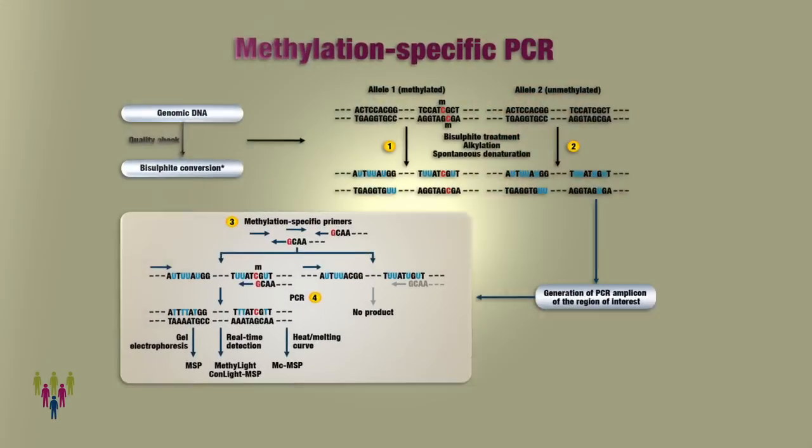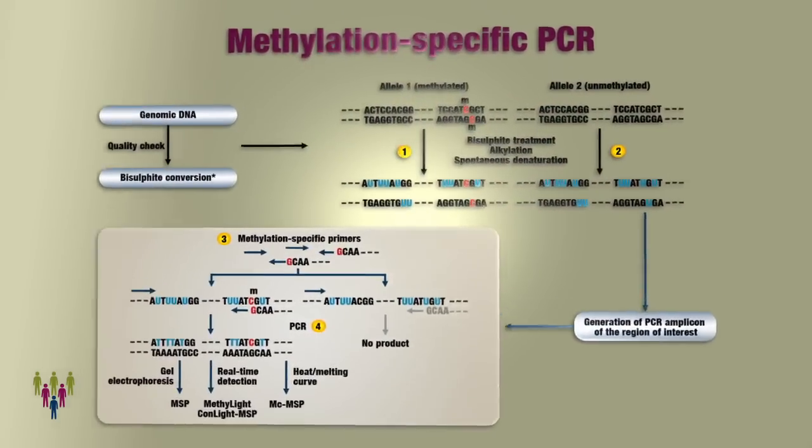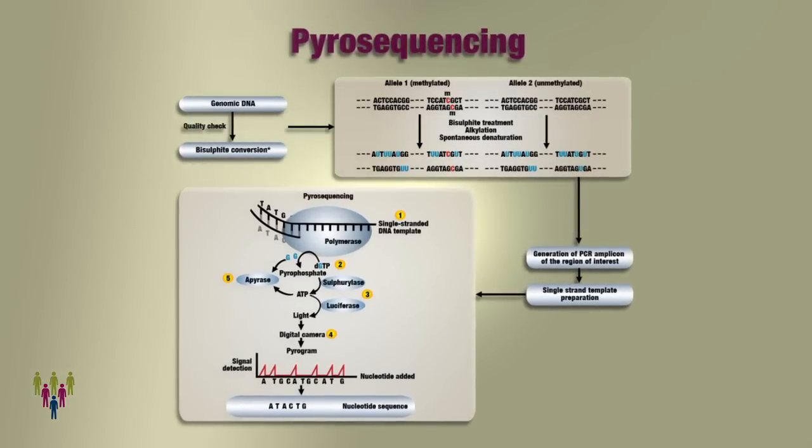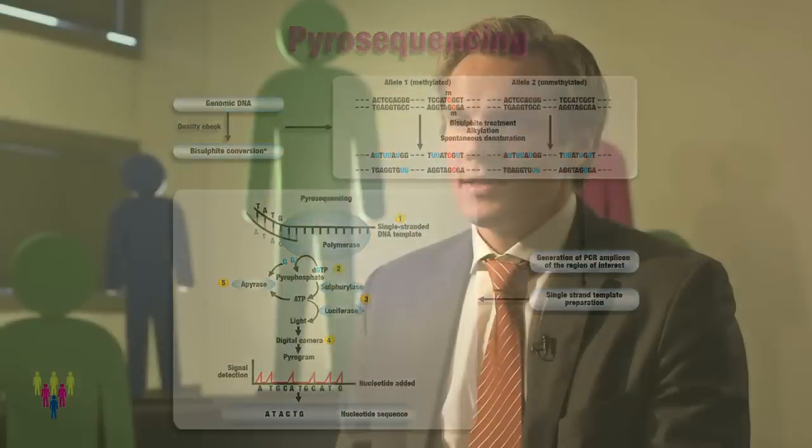Most studies so far have used methylation-specific PCR, but there are also other methods, such as pyrosequencing, MLPA, and multiplex arrays like 450K assays, which are used in some centres for assessment of MGMT promoter methylation status. No matter what technique you use, you have to apply very strict quality control to exclude false positive or false negative cases. This test should only be performed in experienced laboratories, and I would argue it should be centralised to specialised centres.